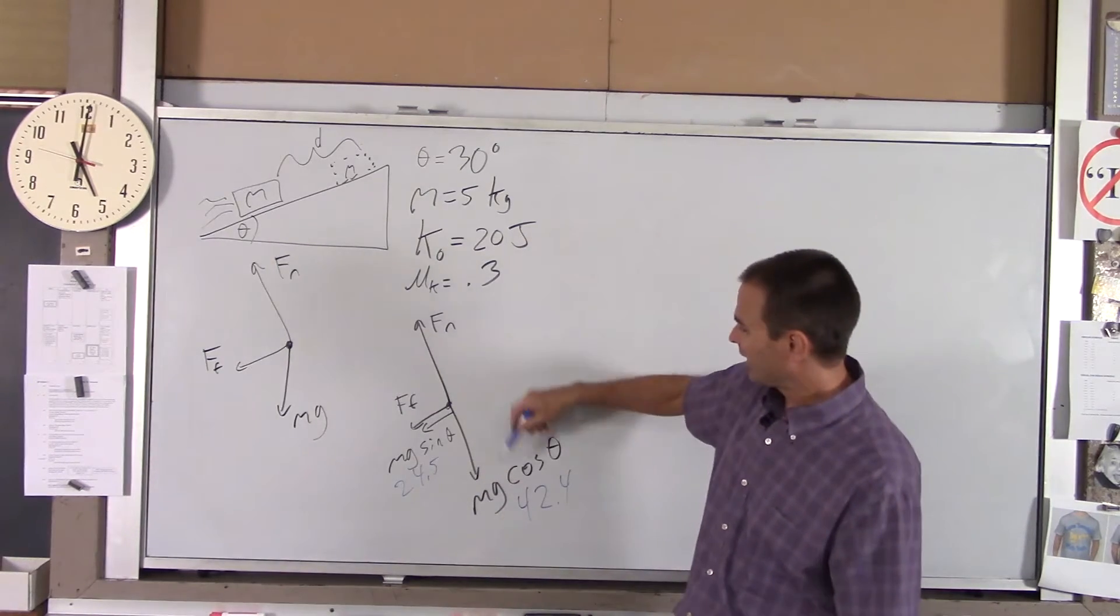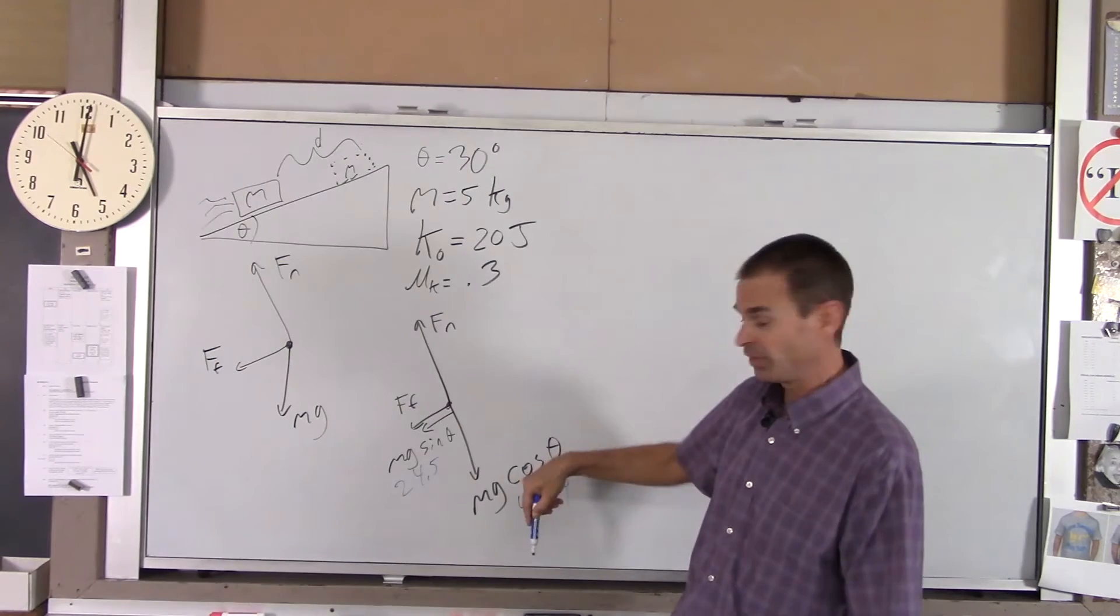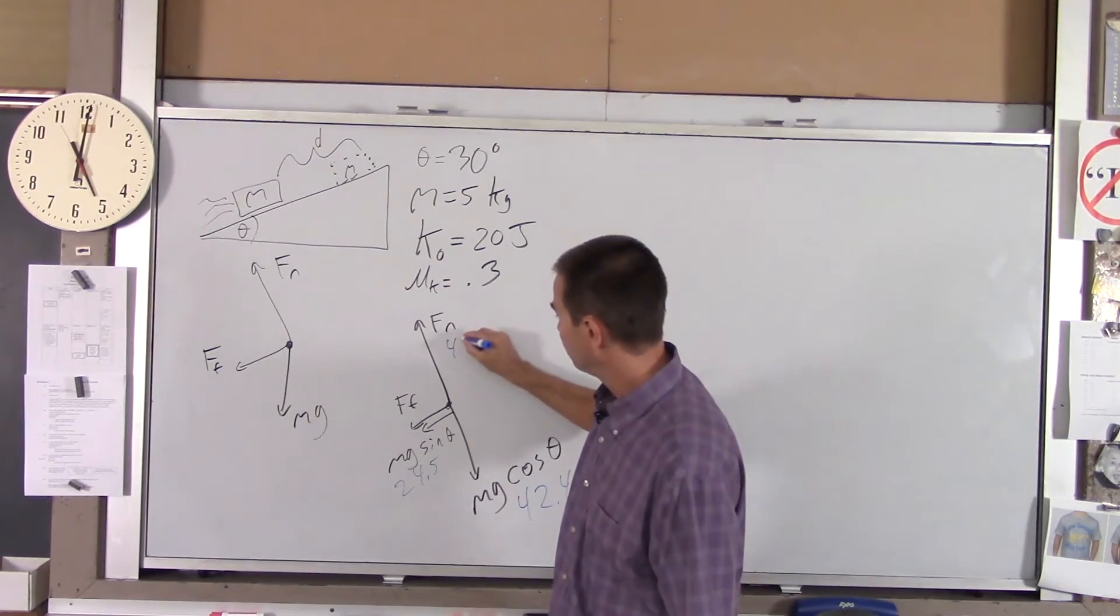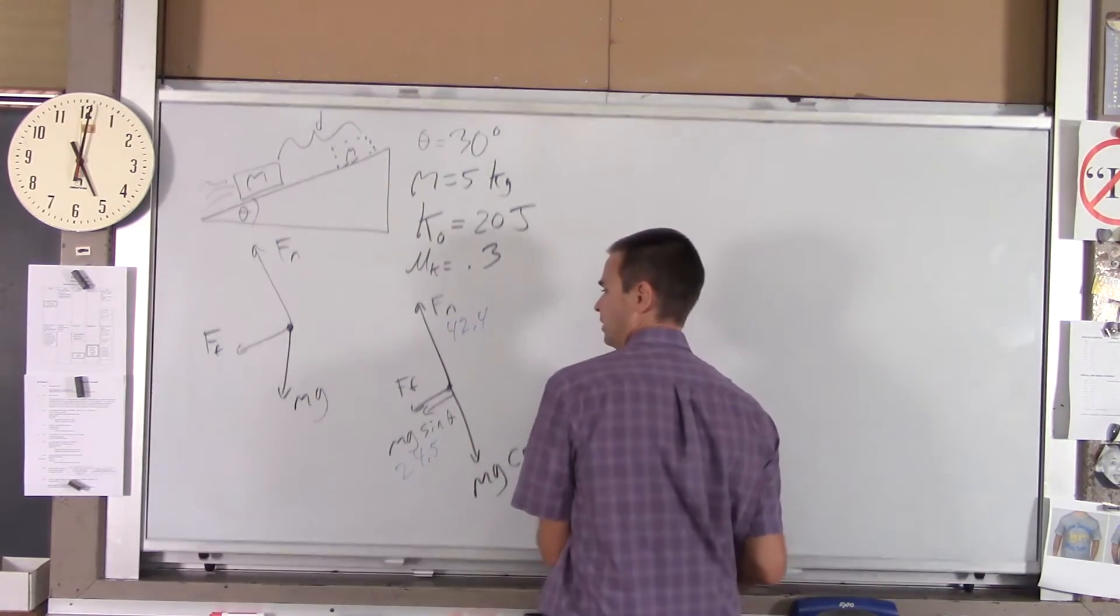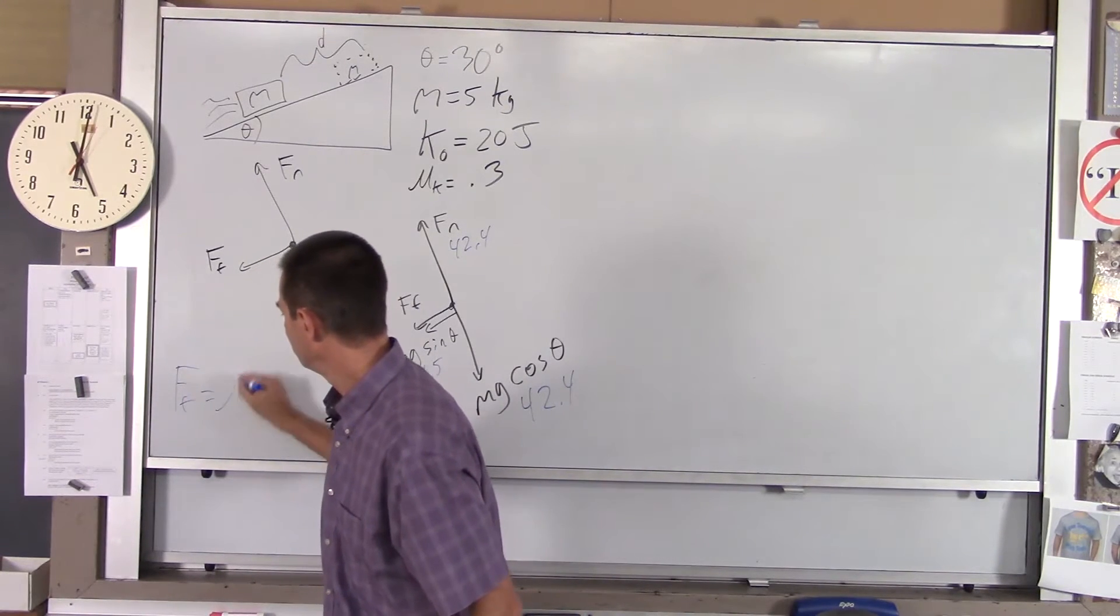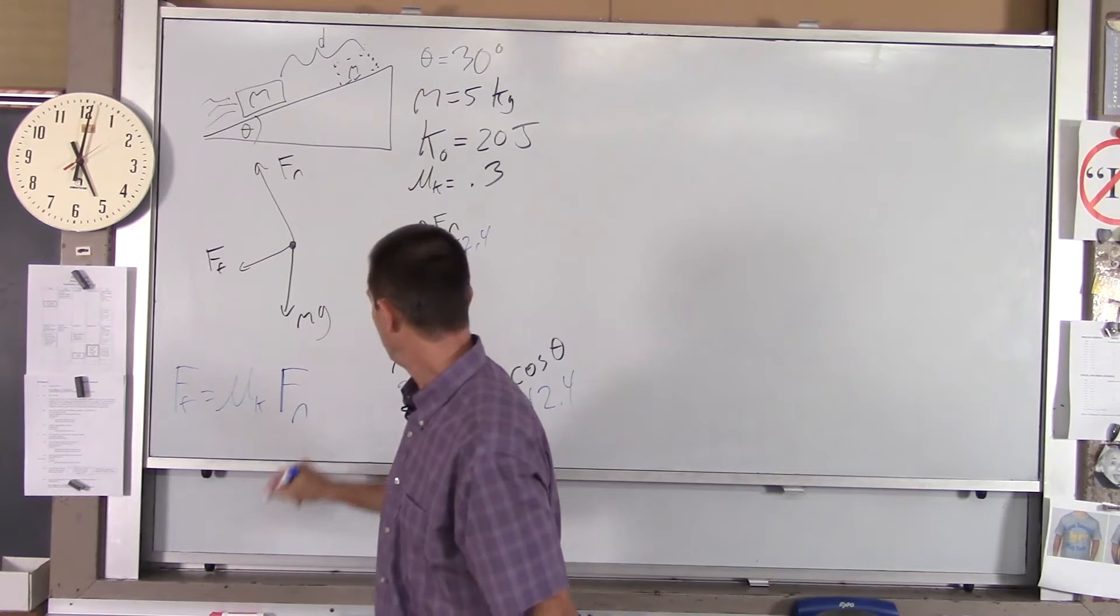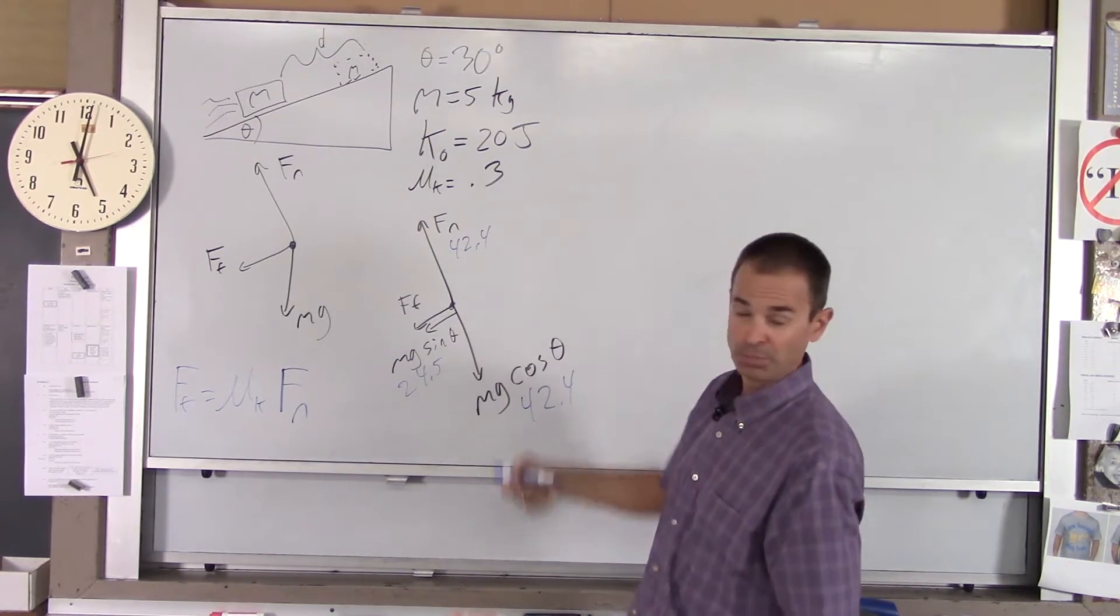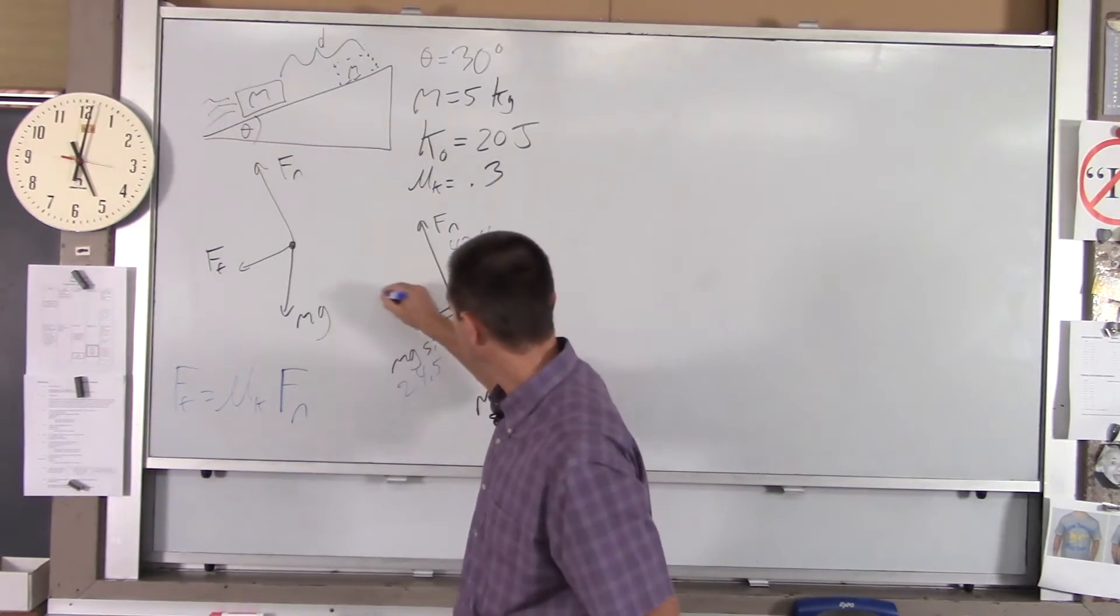Because the block is not accelerating perpendicular to the incline, it's not jumping off the incline or crashing through the incline, FN has to equal Mg cosine theta, so that's 42.4. And friction, I'll write it down over here. The force of friction is mu sub K times FN. It's just 0.3 times 42.4. And if you do that, you get about 12.7.